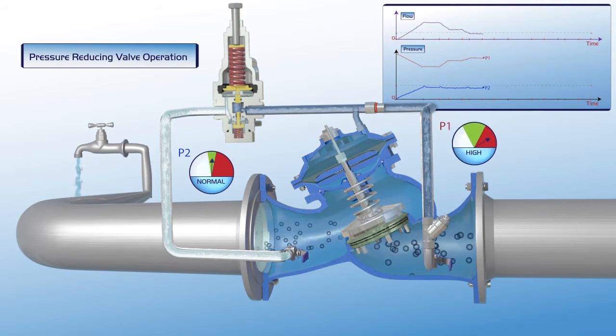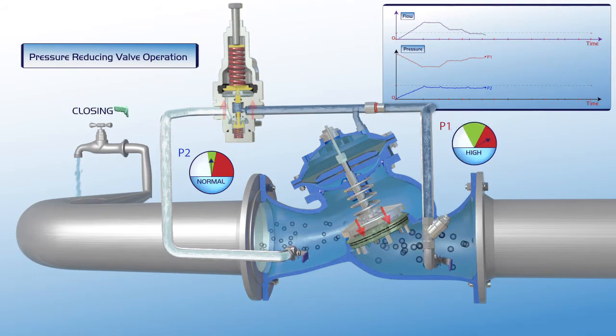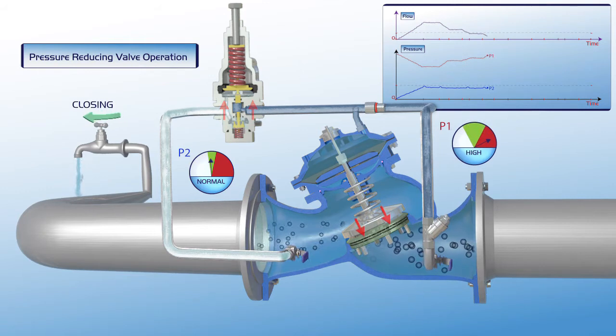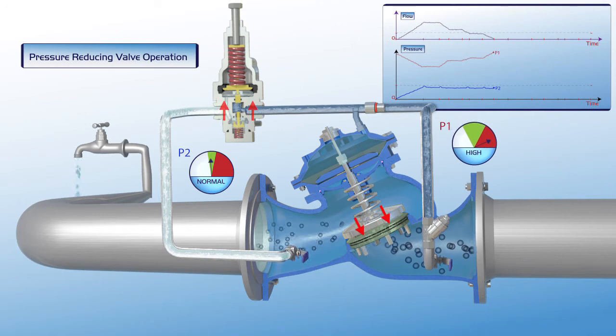Further reduction in demand for water, right down to zero demand, results in full closure of the valve. As presented on the chart, when the flow is zero, the upstream pressure is very high, and although the valve is closed, the downstream pressure remains stable at its designated set point.